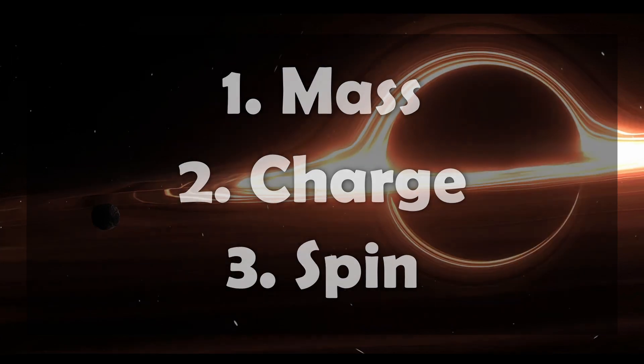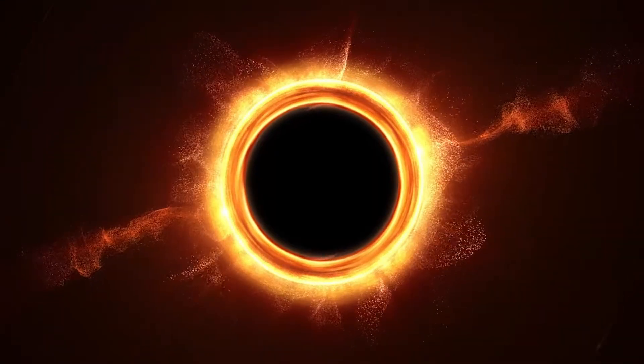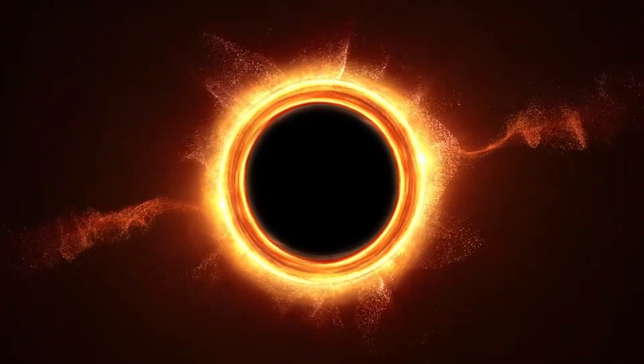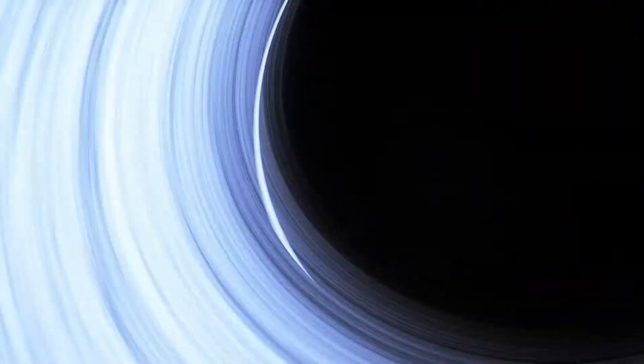That's it. Beyond these traits, one black hole is completely indistinguishable from any other, and nothing else is allowed to make it unique. But if nothing can escape, then how is its spin even measured? How does the spin manage to affect the outside world at all?